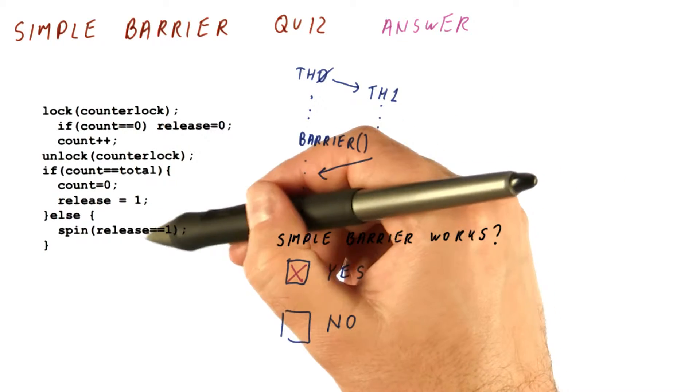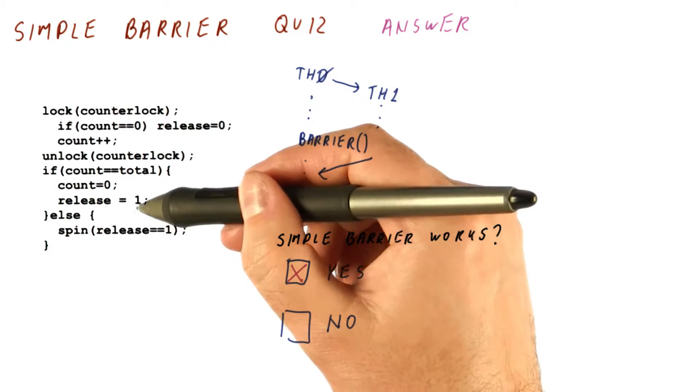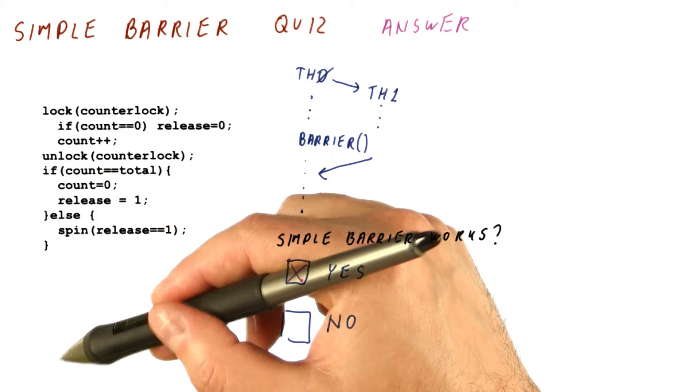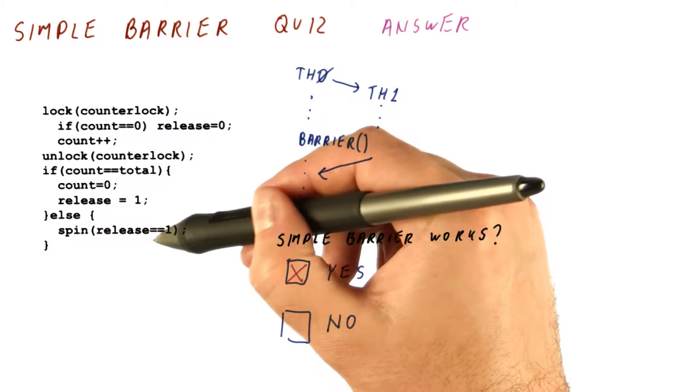But no matter how long we are delayed, eventually we see it. And there is no way to get stuck here. So the thread that does the releasing leaves the barrier, the releasee leaves the barrier.